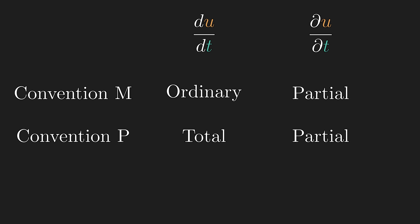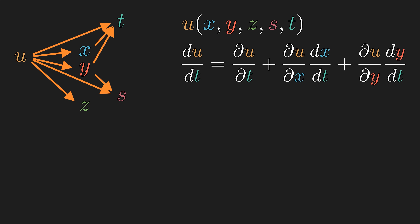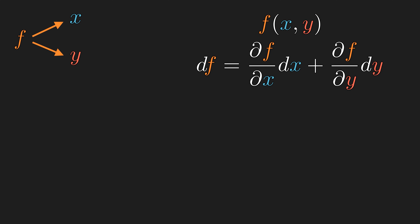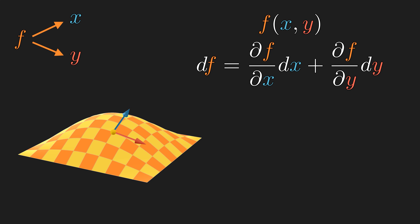In what context is convention P useful? Of course, we have systems where we need to distinguish explicit dependence and total dependence. But there is a use case even in an elementary scenario where f is simply a function of two variables. Let's formally define the differential or exterior derivative of f, which is the sum of partial derivatives of each input variable times the differential of each variable. Each partial derivative represents the slope along each variable's direction, and using those two partial derivatives we can create the tangent plane at any chosen point. df is the linear approximation of how much the function f changes.